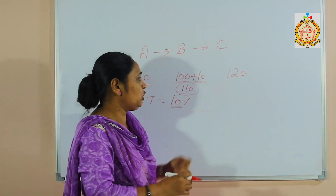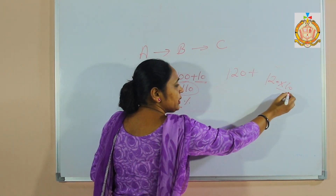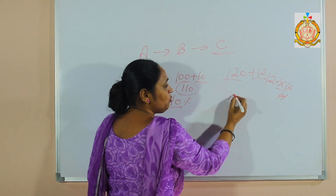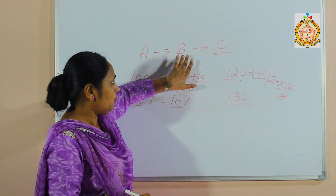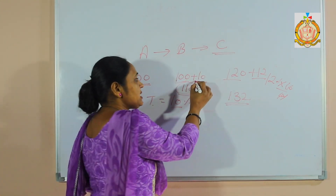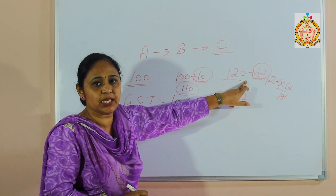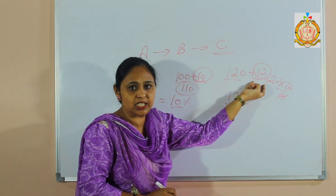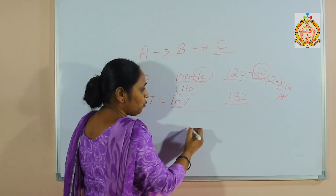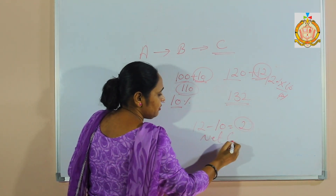B now sells this product to C at 120 rupees — he has increased the value. If GST is again 10%, then 10% of 120 = 12 rupees. So C pays 120 + 12 = 132 rupees. B's payment was 110, C's payment is 132. The GST difference is 12 minus 10 = 2. This difference is called the net GST. Net GST = current GST minus previous GST = 12 − 10 = 2.